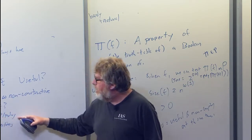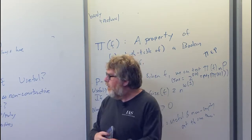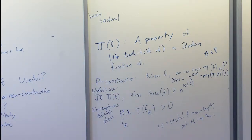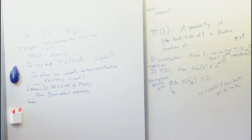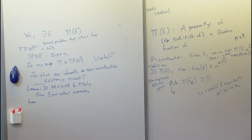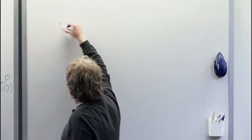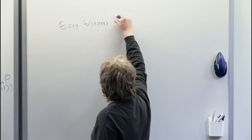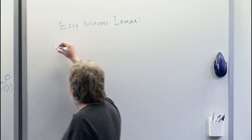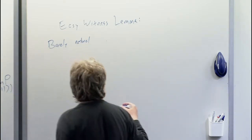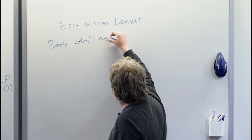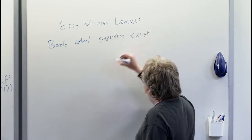This relates NE-intersect-coNE to whether there's a quasi-natural property. The corresponding thing for barely natural properties is the Easy Witness Lemma. This lemma says that barely natural properties exist if and only if E is not contained in P/poly.